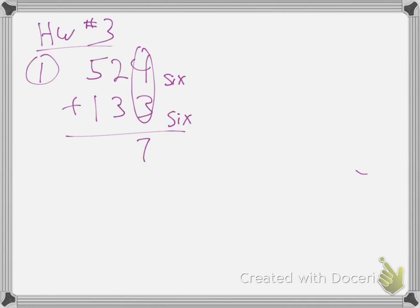We always start on the right side because then we can carry things to the bigger place. When I add four and three I'd like to write seven, but I can't write seven. There's no seven in base six. What's the biggest thing we're going to see in base six? A five.